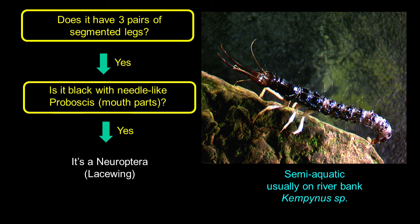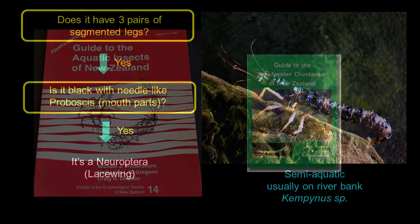One of the other orders that's not really aquatic — it's found usually on the banks of streams and rivers — is one that is often black in colour, it's got a hard sclerotised body, and it has this really distinctive needle-shaped mouthparts. This is a Neuroptera, a lacewing.